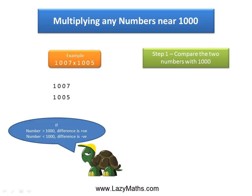During the comparison, since both these numbers happen to be more than 1000, we will be writing the difference with a positive sign. 1007 is 7 more than 1000, so we write the difference as positive 7. And 1005 is 5 more than 1000, so we write the difference as positive 5.